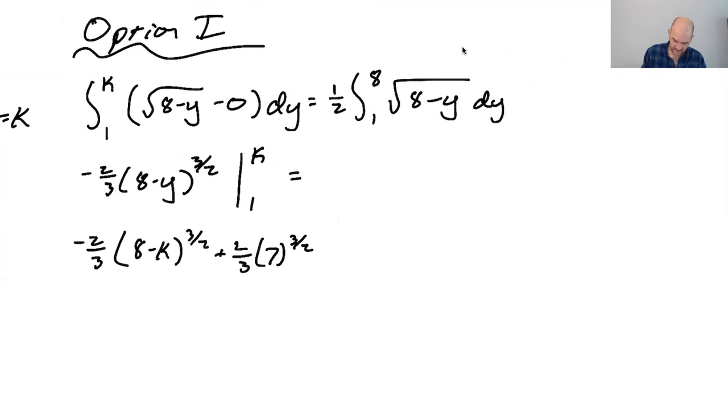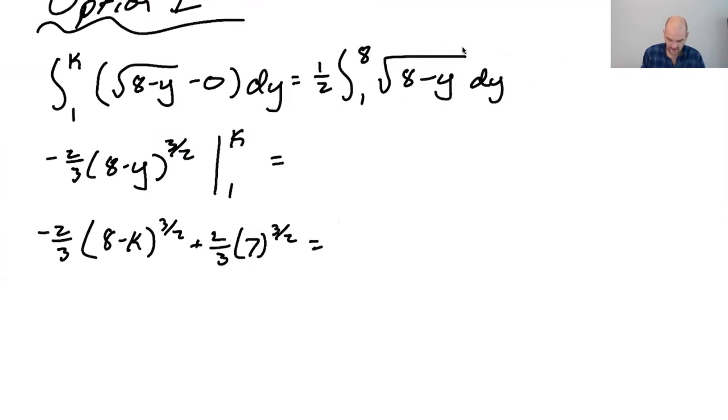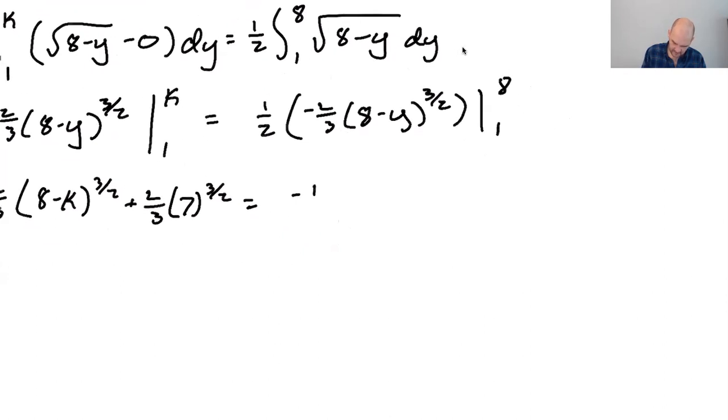Oh my god, the 3 halves minus. So plus 2 thirds, 7 to the 3 halves. What? All right. And then what does this equal? 1 half. So again, negative 2 thirds, 8 minus y to the 3 halves from 1 to 8. So negative 1 third. Okay, you plug in 8 and it goes away. That's good. 0 to the 2 thirds. And then minus, you plug in 1 and you get 7 to the 2 thirds.